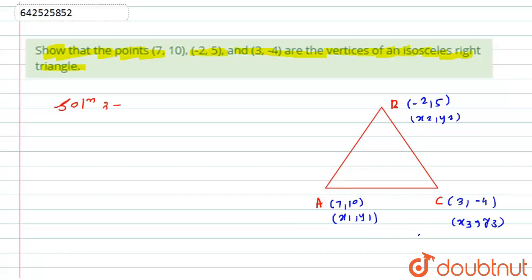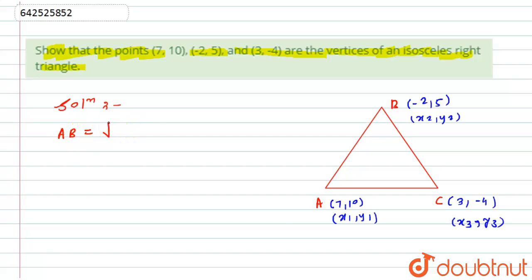For this, I have to prove that two sides are of equal length. If that is proved, then I can say that the given vertices are of an isosceles triangle. So let's start by calculating the length of AB using the distance formula.